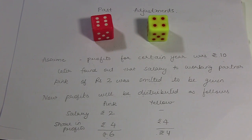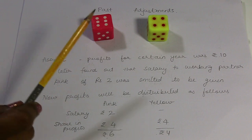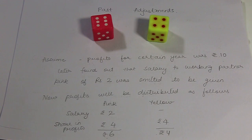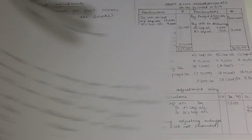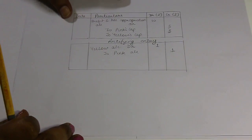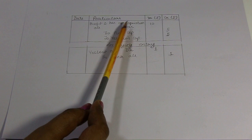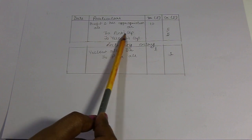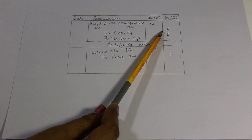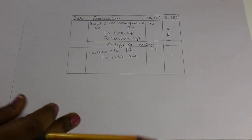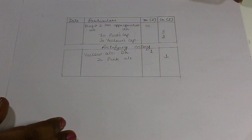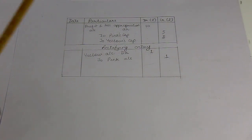So the books of accounts are closed. Now, for this correction, we will pass a single adjustment entry to the books of accounts, which will give the effect that Pink will get Rs.6 and Yellow will get Rs.4. In our books of accounts, there is already an entry that exists: Profit and Loss Appropriation Account debited to Pink's Capital Account and Yellow's Capital Account, each with Rs.5 — as explained in earlier tutorials.